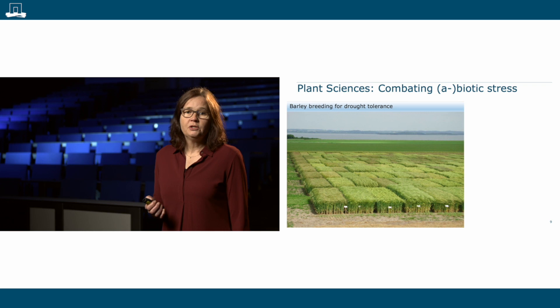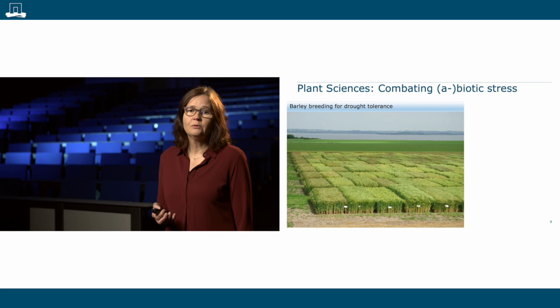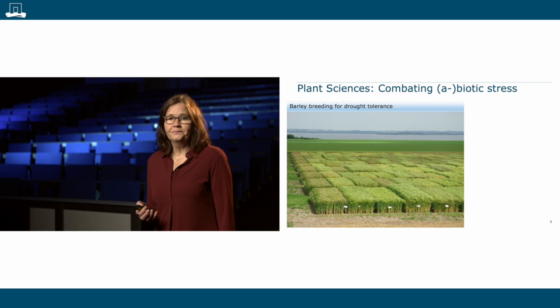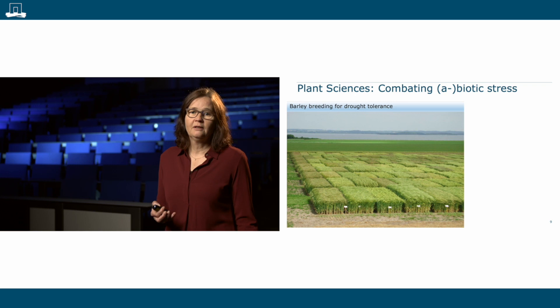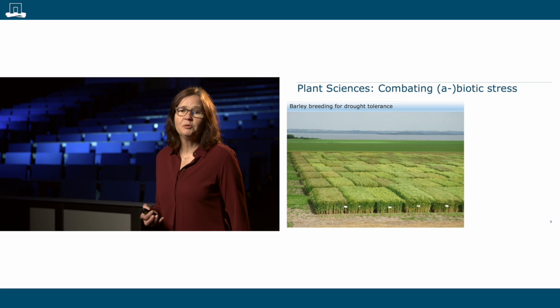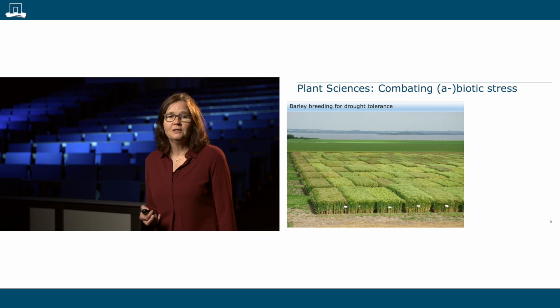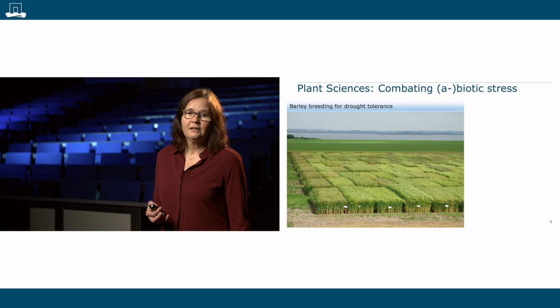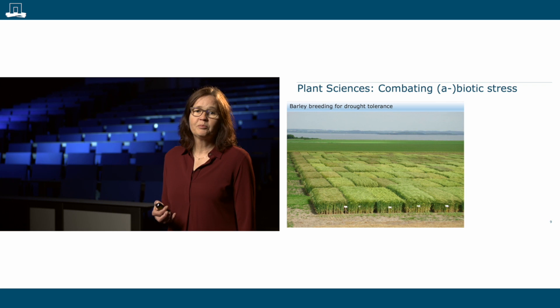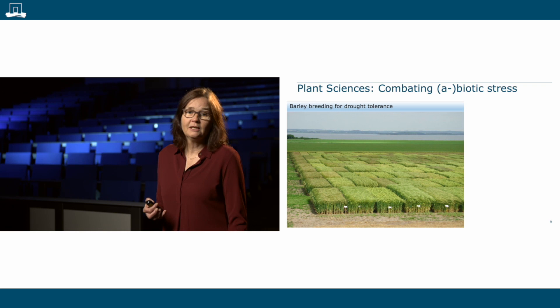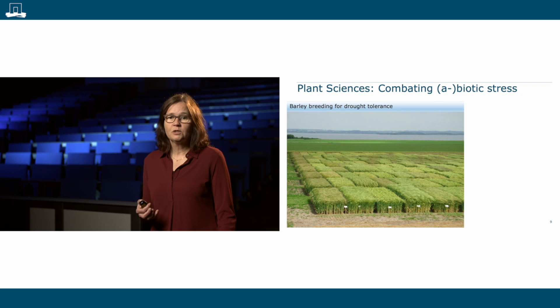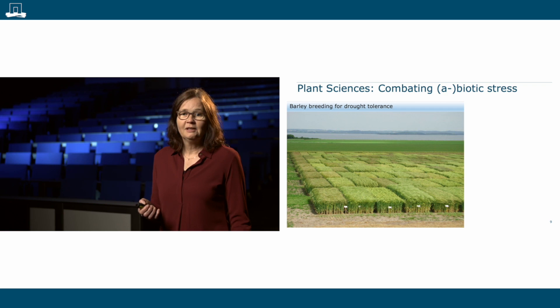Climate change also leads to increased flooding, salt stress, and drought. In this example, I've shown a picture of barley. Drought reduces the yield of barley grains, which are obviously very important for beer brewing. New barley varieties are being developed with increased drought tolerance. Here you see a field trial with offspring of plant breeding projects in which different offspring seedlings are selected for drought tolerance, grain yield, plant growth, and beer brewing quality.